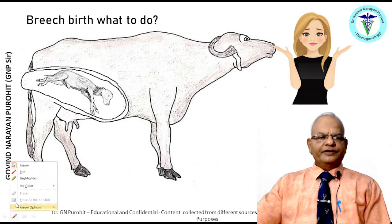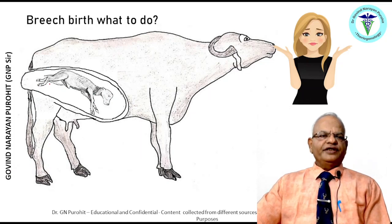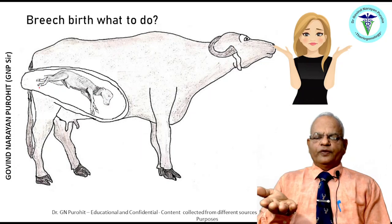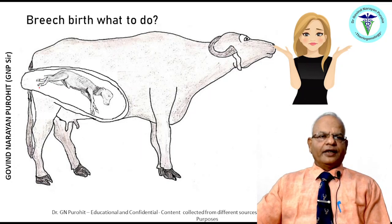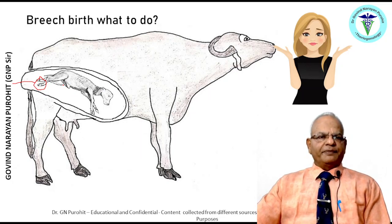Rarely, breech birth can occur, where the hind legs come first and the forelegs and head face toward the mother's diaphragm. The hooves will face the opposite direction, allowing identification. If both legs are in the birth canal, apply ropes on both legs separately and pull, as the fetus will come out easily if the legs are straight. If the legs are deviated — hock deviation or bilateral hip deviation — this must be corrected before pulling.